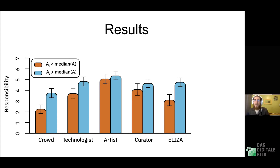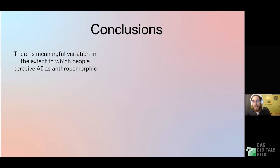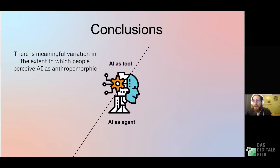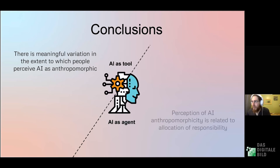Because this was correlational — only looking at how two things co-vary — we ran a second experiment to get at the causal mechanisms. The conclusions from study one: we found meaningful variation in the extent to which people perceived the AI as anthropomorphic, with some seeing it as a tool and others seeing the same AI as an agent. This perception of anthropomorphicity was related to the allocation of responsibility — especially for the AI itself: when people anthropomorphized it more, they rated more responsibility to the AI.